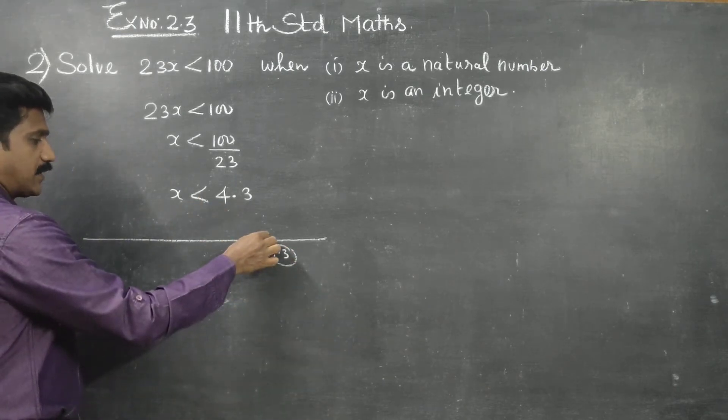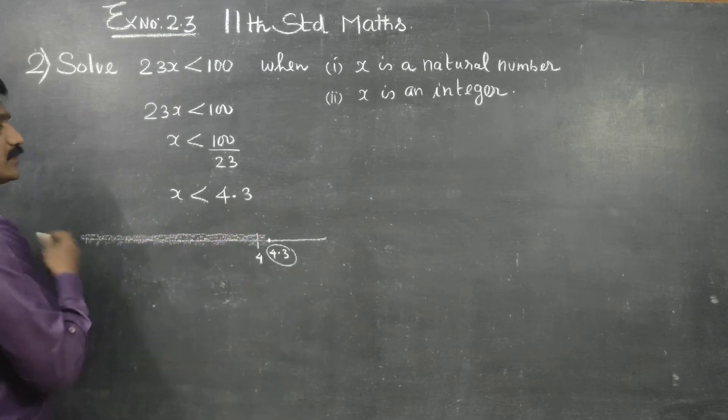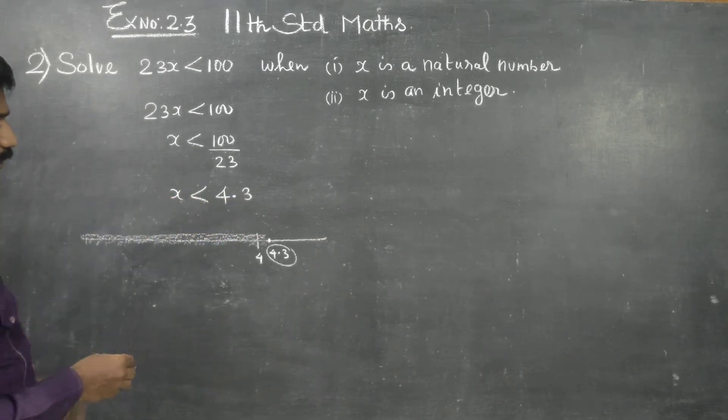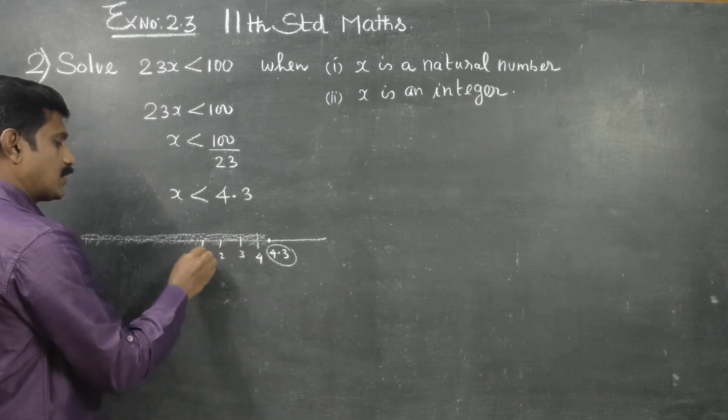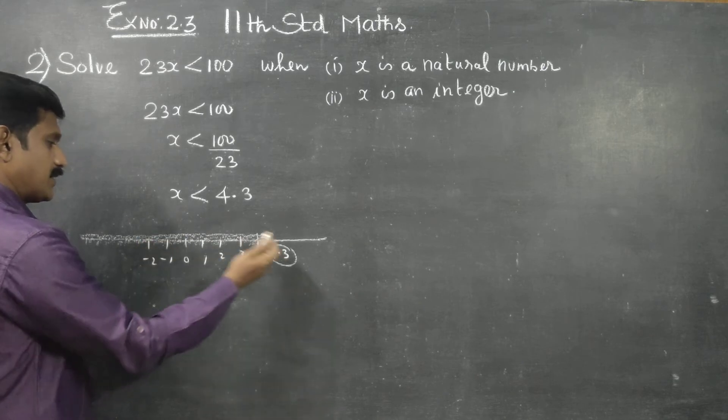Less than 4.3, you will get all answers. If you have 4, 3, 2, 1, 0, minus 1, minus 2, these are not the final answers.